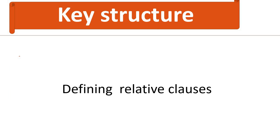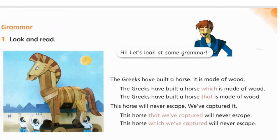The key structure is about defining relative clauses. What's the meaning of relative clauses? The Greeks have built a horse. It is made of wood. We have here two sentences. These two sentences can be written as one sentence by using 'which' and 'that': 'The Greeks have built a horse which is made of wood,' and 'The Greeks have built a horse that is made of wood.' Which and that have the same meaning and the same use.